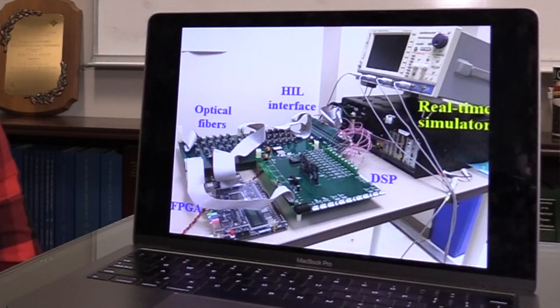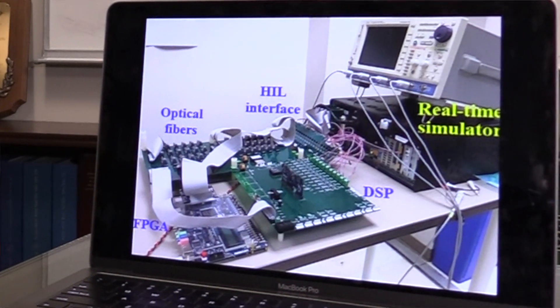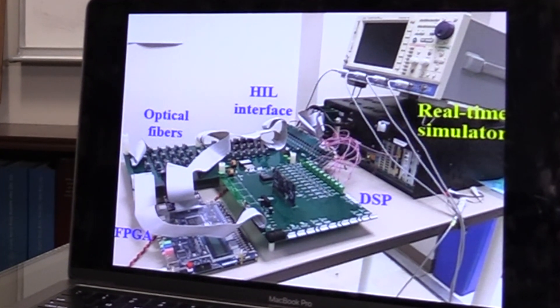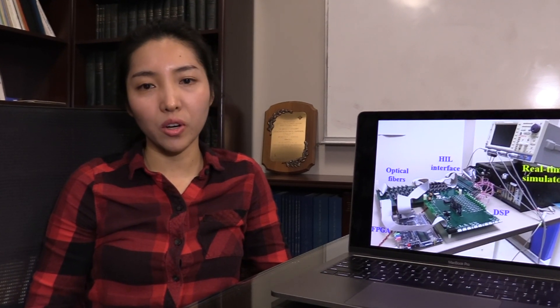Then this is the image of our control hardware in the loop system that we use to test all the control algorithms. It really helps us to reduce all the debugging efforts and possible damage to the hardware when we're doing high power tests.